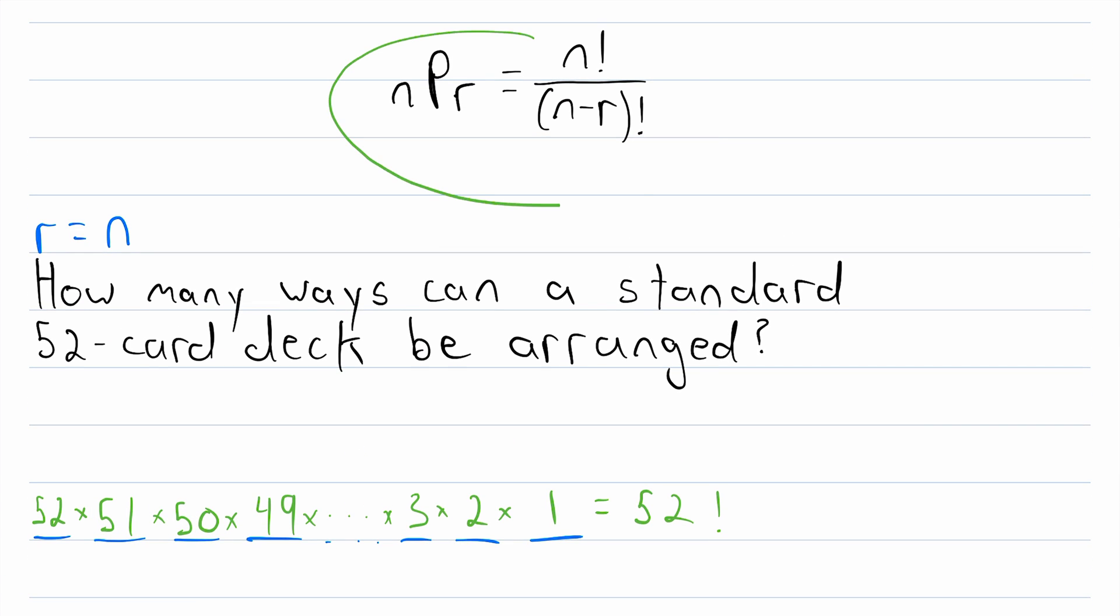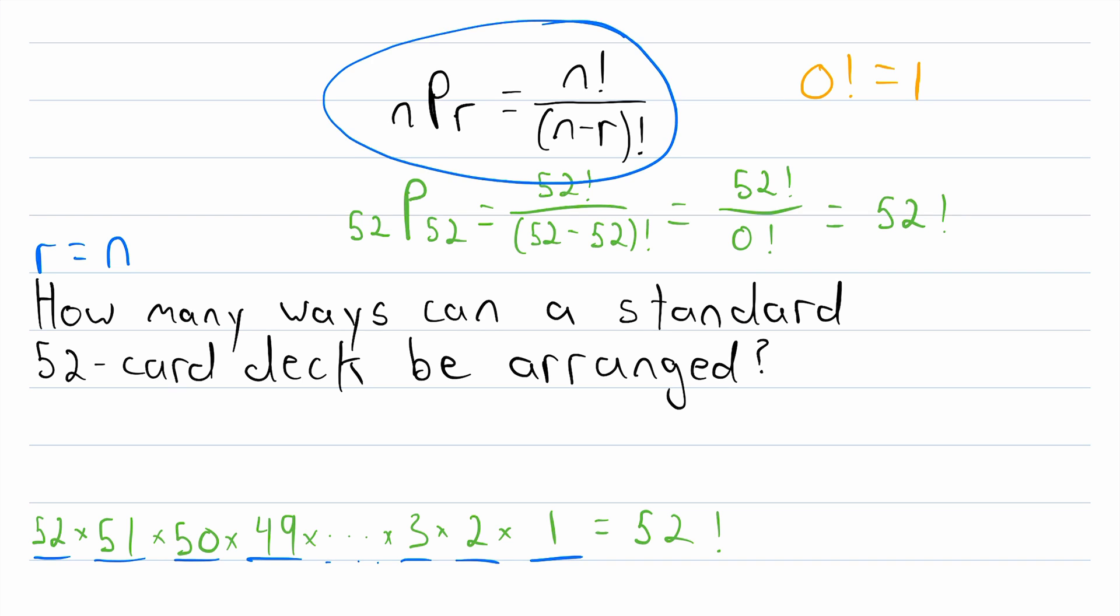And if we tried using our formula, we could verify this answer. In this case, n and r would both be 52. So what we would get when we use the formula is 52 factorial in the numerator, and then in the denominator, we would have 52, that's n, minus 52, that's r, factorial. This, of course, is equal to 52 factorial divided by 0 factorial. And 0 factorial is defined to be equal to 1. So that just leaves us with 52 factorial. So hopefully that gives you a good idea of why this formula works when r is equal to n.